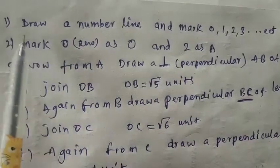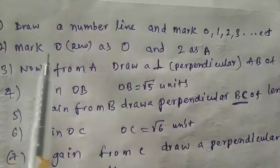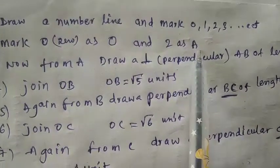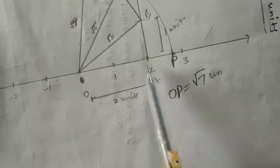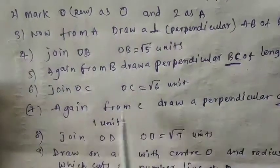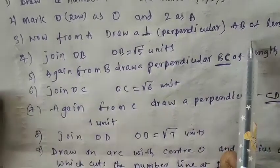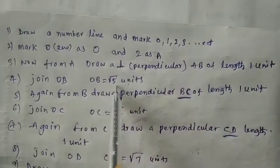Now let us take the procedure step by step. Step 1: Draw a number line and mark 0, 1, 2, 3, 4, etc. Step 2: Mark 0 as O and 2 as A. Step 3: From A, draw a perpendicular AB of length 1 unit. Step 4: Join OB. OB is equal to root 5 units.